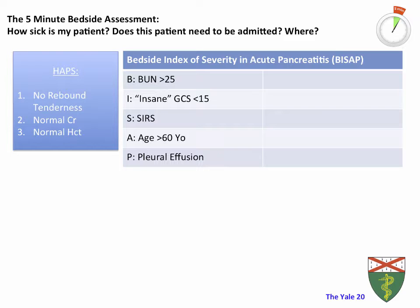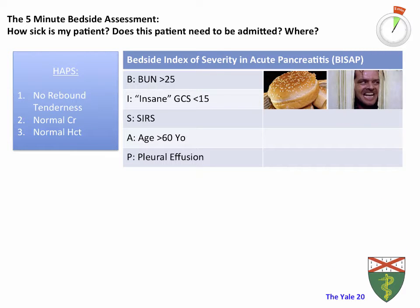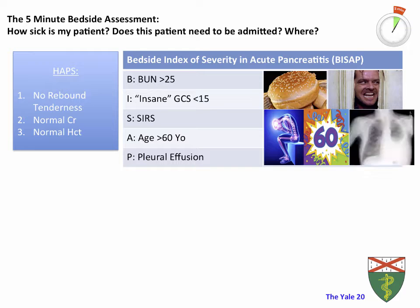BICEP stands for the Bedside Index of Severity in Acute Pancreatitis. The score consists of: B for BUN greater than 25; I, reflecting a Glasgow Coma Scale less than 15; C for the SIRS criteria — having two of the four SIRS criteria gives one point; E for age over 60; and P for the presence of a pleural effusion on chest x-ray. A visual aid: the BUN is for the bun, 'insane' is a shout-out to The Shining, SIRS reflects systemic inflammation, age over 60, and a pleural effusion visible on x-ray.